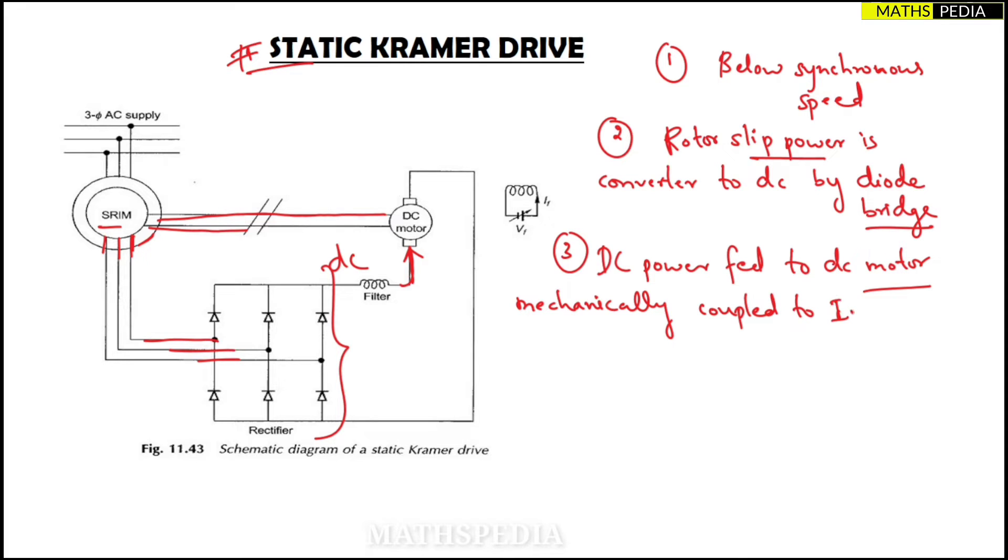Coupled to slip ring induction motor. We are taking DC here - DC is fed to the DC motor, which in turn is coupled to the induction motor. Now the fourth point: